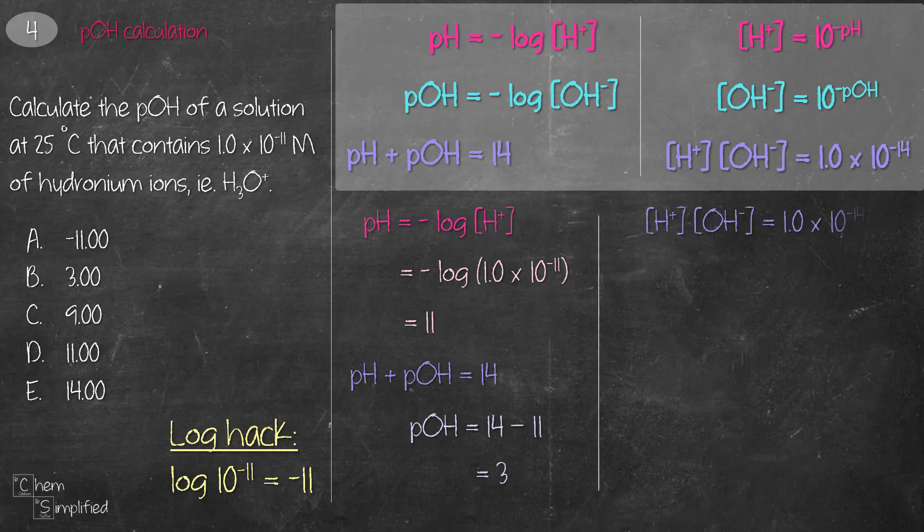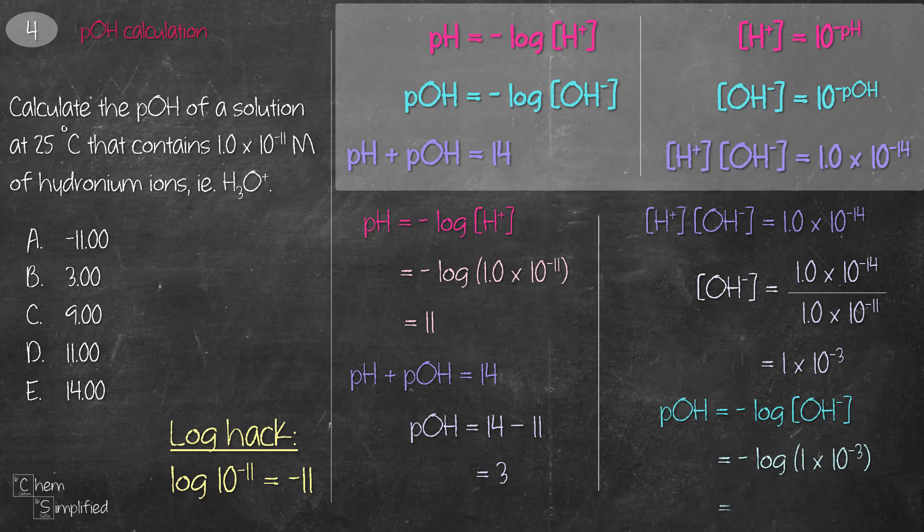So pOH is just going to be the difference between 14 and 11, and that gives us 3. There's another way that we can calculate, which is using the concentration of hydronium to find the concentration of hydroxide. And that turns out to be 1 times 10 to the power of negative 3. And then we use a second equation, which is the pOH equals negative log of OH- concentration, and we plug in the value, and that gives us 3. The answer should be the same. Either way that you calculate, it will involve two equations, and both will point us to B, which is 3.00.